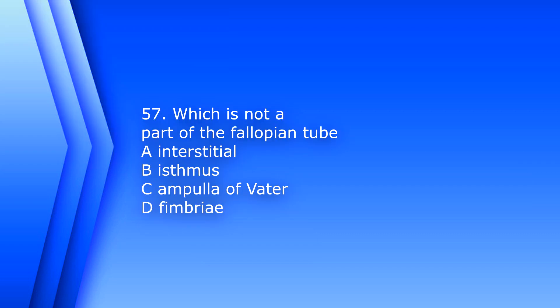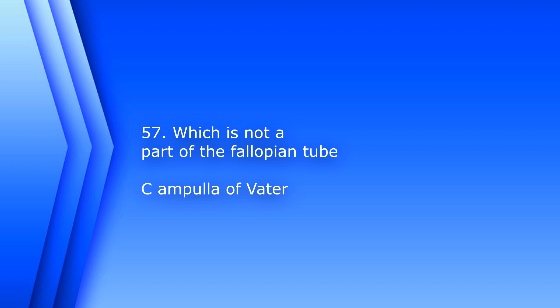Question 57. Which is not a part of the fallopian tube? A. Interstitial, B. Isthmus, C. Ampulla of Vater, D. Fimbria. The answer is C, Ampulla of Vater — that's where the common bile duct enters the duodenum.